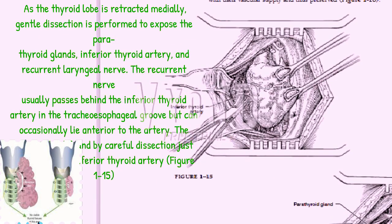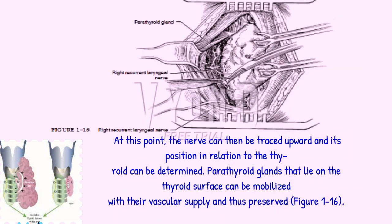As the thyroid lobe is retracted medially, gentle dissection is performed to expose the parathyroid glands, inferior thyroid artery, and recurrent laryngeal nerve. The recurrent nerve usually passes behind the inferior thyroid artery in the tracheoesophageal groove, but can occasionally lie anterior to the artery. The nerve is best found by careful dissection just inferior to the inferior thyroid artery, figure 1-15. At this point, the nerve can be traced upward and its position in relation to the thyroid determined.